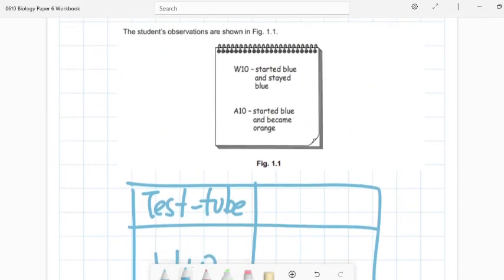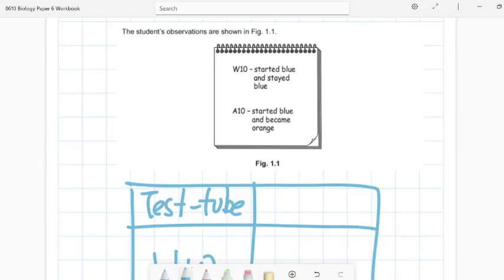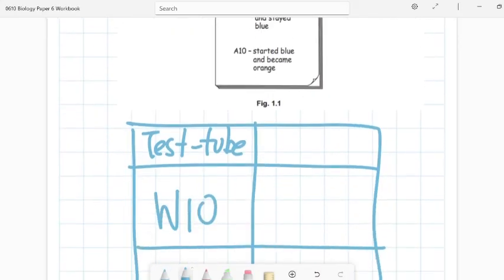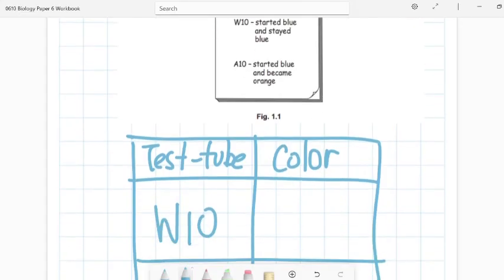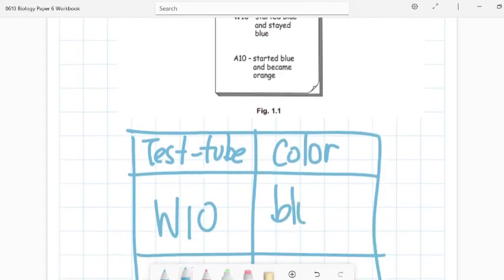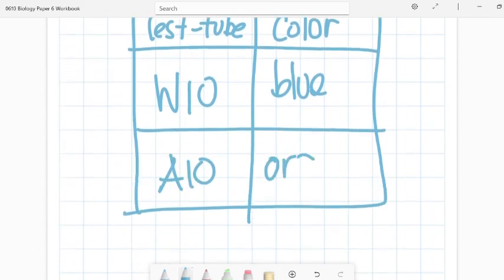And then you have color. Do not say, because it stayed blue, that means it doesn't have reducing sugar. That is not for you to do. I'm just telling you, put it in a table and just write the colors down. They don't expect you to analyze the results just yet. So, colors. You can say color of the test, color of the sample, just say color. Make it simple guys. There's no unit for color as we know. So W10, it stays the same, or you can just say it's blue. And then A10, you can say it turned orange or just orange because it's simple. And that's it. That is as simple as it. This is the simplest form you could ever get.